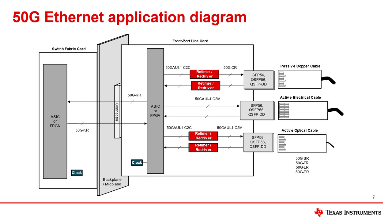Let's review how these clauses define different sections of a typical 50 gigabit Ethernet application. 50G KR covers the backplane connection between the MAC on the switch fabric and the PHY on the line card. If a retimer or redriver is used on the line card, the 50G C2C spec defines the connection between the PHY and the signal conditioner. For the front port: a passive copper cable uses 50G CR, an active electrical cable uses 50G C2M, and an active optical cable uses 50G C2M for the electrical board connection while the optical fiber portion is defined by 50G Base SR, FR, LR, or ER, depending on the mode and reach.